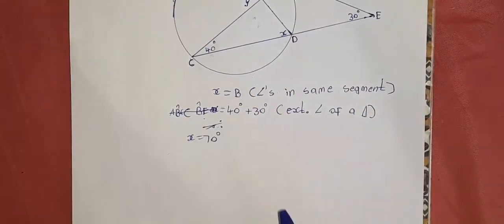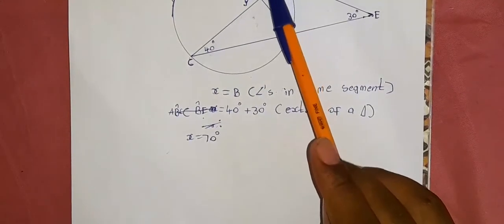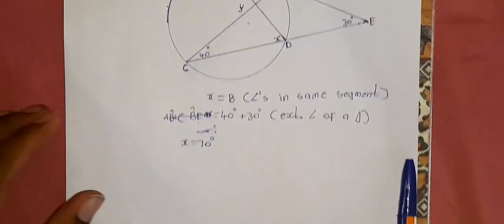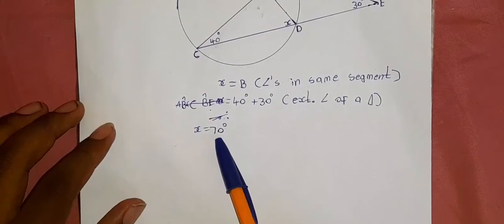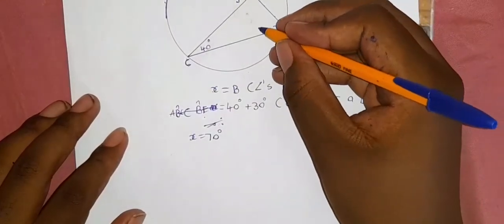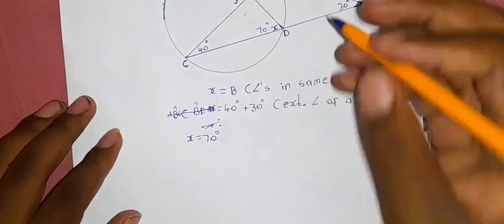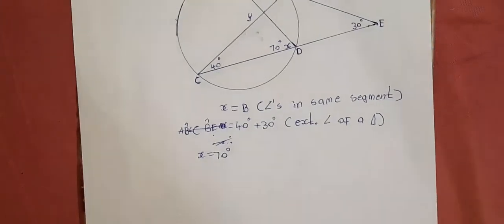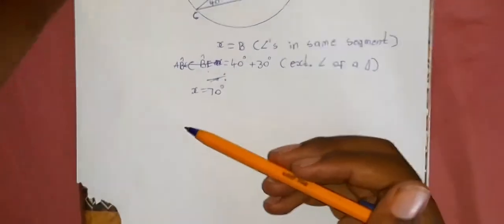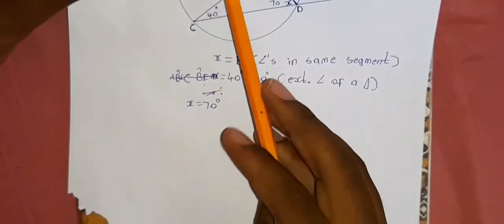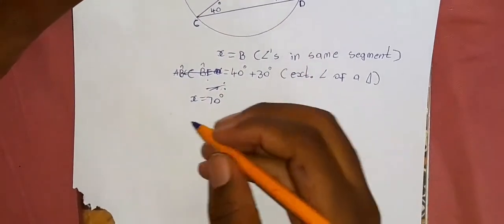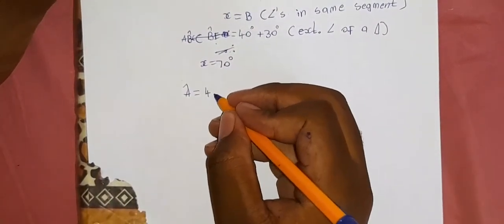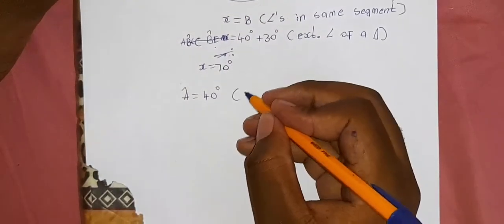So we said the exterior angle of a triangle is equal to the sum of the two opposite interior angles. That gives us x equal to 70 degrees. Now, to find angle y: we know that angle A is equal to 40 degrees, because of angles in the same segment.